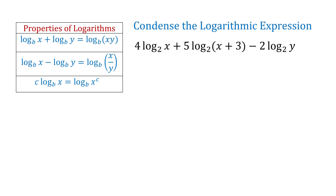To condense a logarithmic expression means to write a sum or a difference of two or more logarithms as a single logarithm. For this, we will use the following properties: the product rule, the quotient rule, and the power rule.